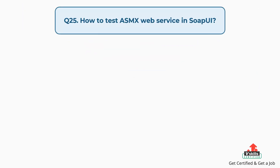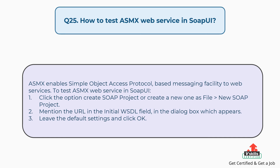Question number twenty-five: How to test an ASMX web service in SOAP UI? ASMX enables simple object access protocol-based messaging facility to web services. To test an ASMX web service in SOAP UI, click the option to create a SOAP project or create a new one via file, new SOAP project. Mention the URL in the initial WSDL field in the dialog box which appears, leave the default settings and click OK.